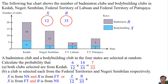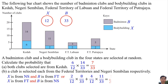The probability of the badminton club being from Negeri Sembilan is 11 over 33. So the probability is 5 over 33.